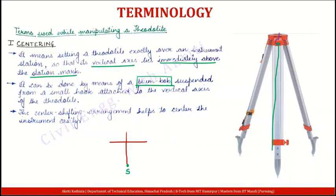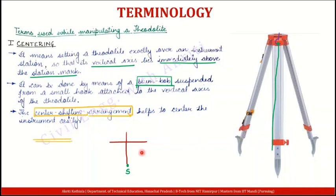Ek aur method jo hum centring karne ke liye use kar saktay hain woh hai center shifting arrangement of a theodolite. To theodolite mein, hum ne last lecture mein dekha tha, ki do plates hoti hain jo ek dusre ke oopar slide kar sakti hain, aur uski help se aap centring kar saktay hain — usse bola jata hai center shifting arrangement. Center shifting arrangement hum student level pe avoid kartay hain aur hum tripod legs aur plumb bob ki help se centring karne ki koshish kartay hain. For more accurate work, we can always use center shifting arrangement to center our instrument.